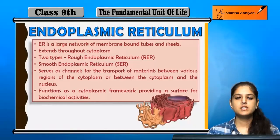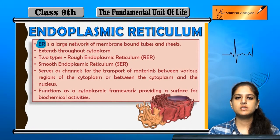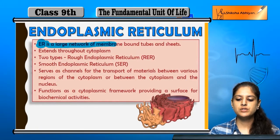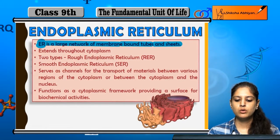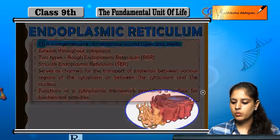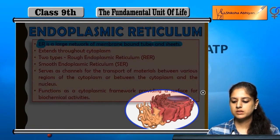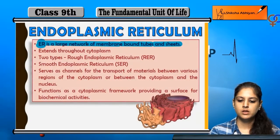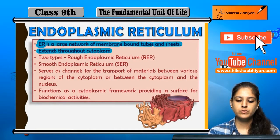The first organelle we discuss is the endoplasmic reticulum, called ER for short. It is a large network of membrane-bound tubes and sheets. As you can see, there are different sheets and tubes forming a network — this is how the endoplasmic reticulum looks. It extends through the cytoplasm.